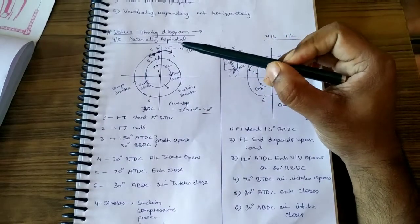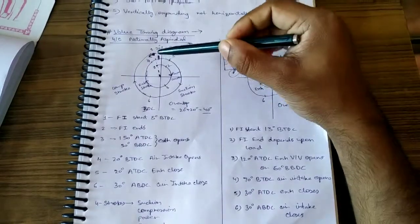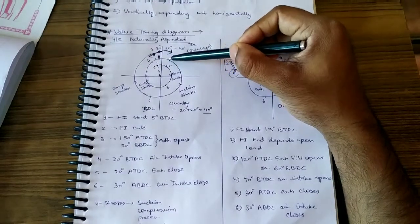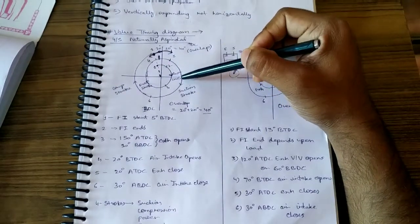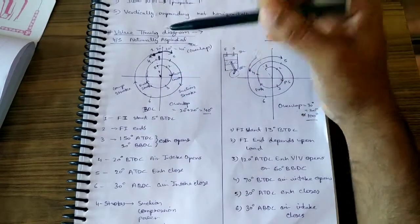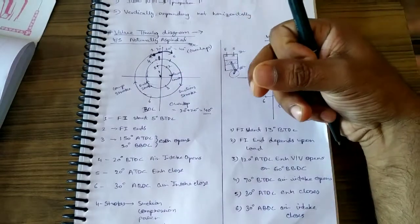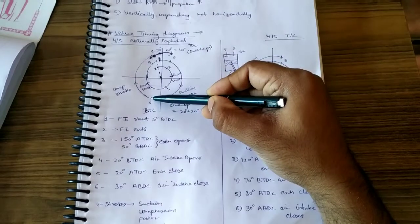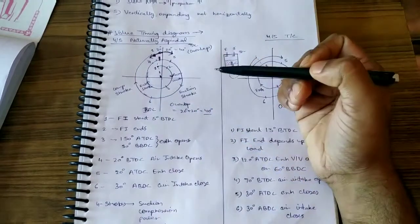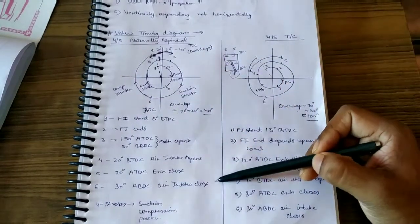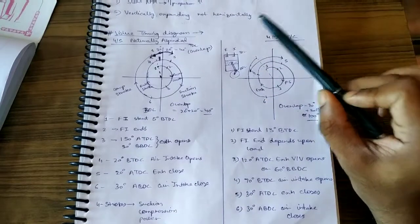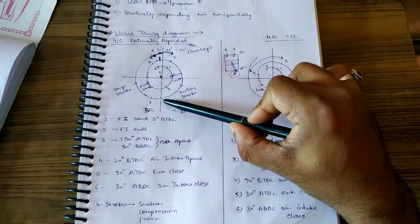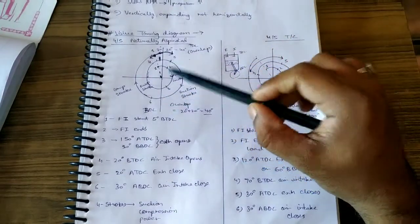The suction valve remains open through the suction stroke as the piston comes down, drawing in fresh air. At point six, which is 30 degrees after BDC, the air intake — the suction valve — will close, completing the suction stroke.